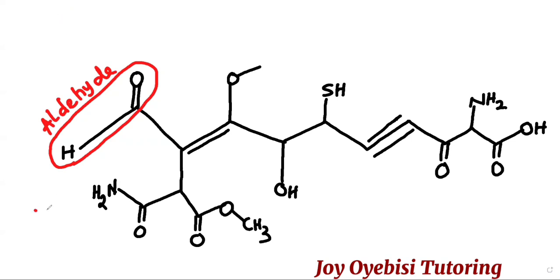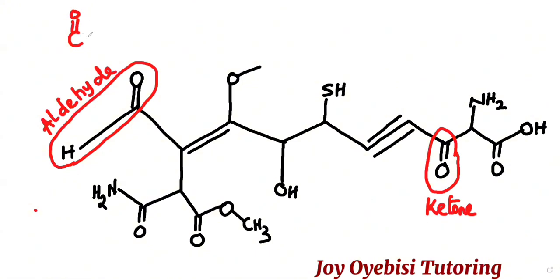We also have a functional group that looks like an aldehyde — this is called a ketone. The difference between a ketone and an aldehyde is that a ketone has a carbonyl group connected to two different alkyl groups. It is connected to two carbon chains, unlike the aldehyde which is connected to at least one hydrogen.